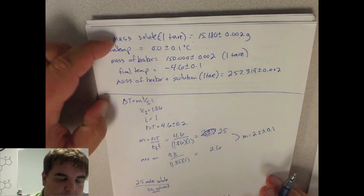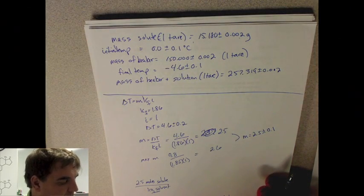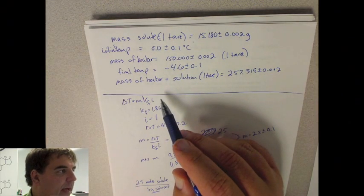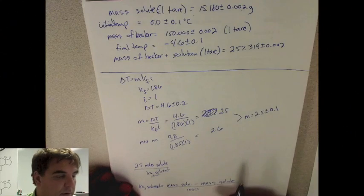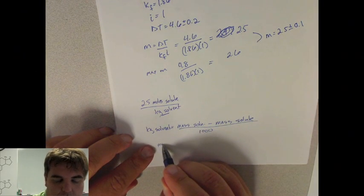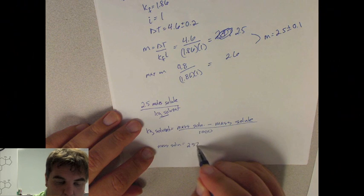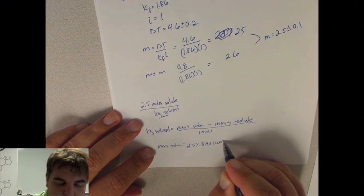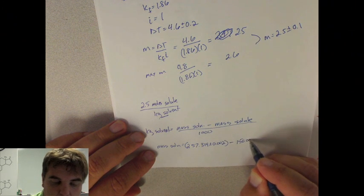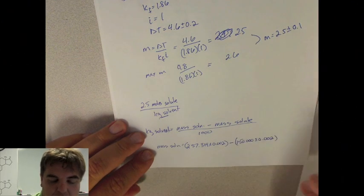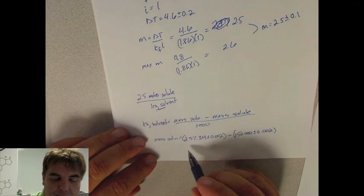So we've got mass solute. The other thing we need to have is the mass of the solution. Here we have the mass of the solution and the mass of the beaker, so that gets us part of the way there. We have the mass of the beaker here, so then we should be able to get it. So the mass of the solution is going to equal the mass of the beaker with solution, 257.319 plus or minus 0.02, minus the mass of the beaker, 150.000 plus or minus 0.02.